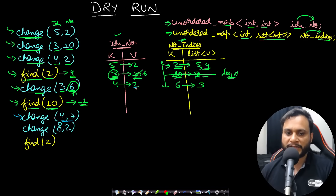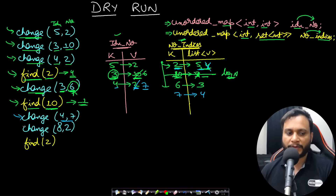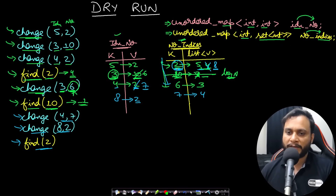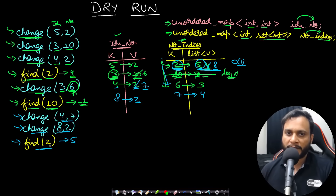change(4, 7) arrives. Index 4 has value 2, so we go to the inverted map for key 2 and erase index 4. The set for 2 still has {5}, so we don't remove the entry. We update the first map to {4:7} and add {7:{4}}. Then change(8, 2) stores 2 at index 8, adding 8 to {2:{5,8}}. find(2) checks the inverted map — 2 is present — and returns the first element of the sorted set, which is 5.